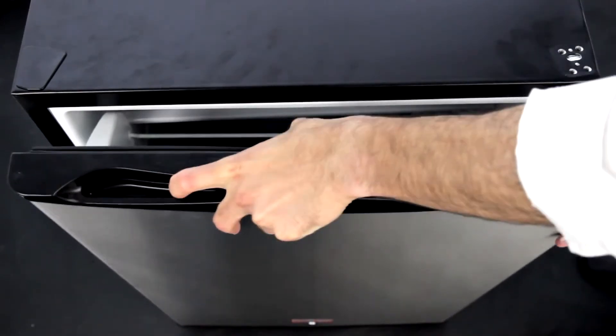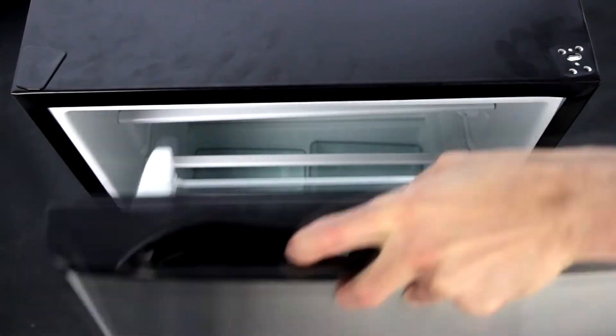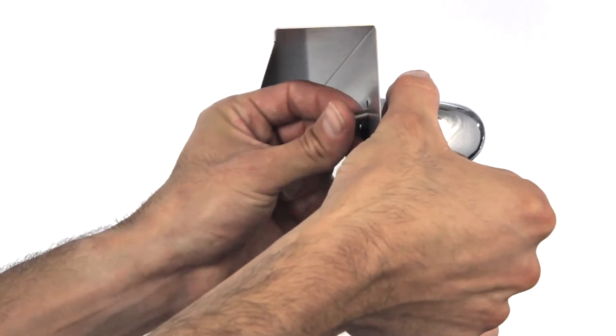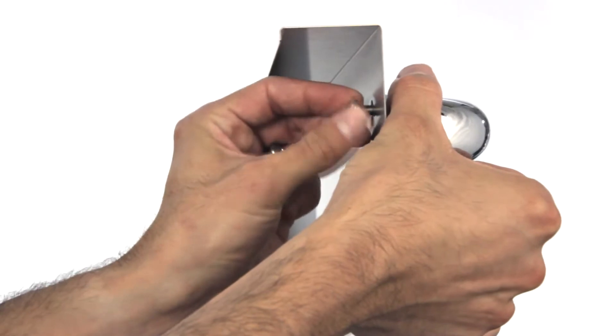Now remove the door and place it somewhere where you can work on it without scratching it. Lay the stainless steel door sleeve on its side, with the holes for the handle at the top.